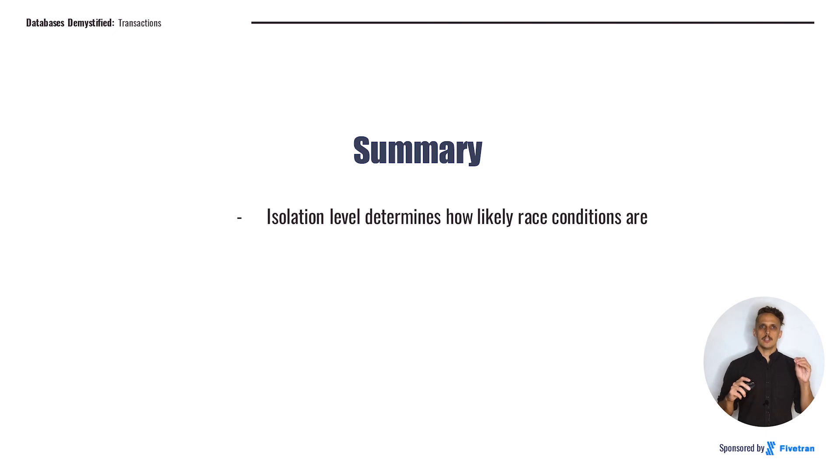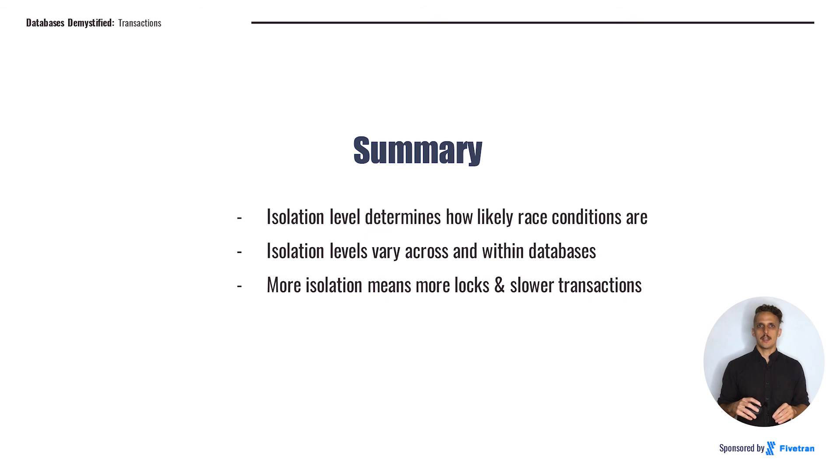So let's summarize. Isolation level determines how likely race conditions are in our database. If we have more isolation, we'll have fewer race conditions, and if we have less isolation, we'll have more race conditions. These race conditions can lead to bugs that can be very difficult to deal with. Isolation levels can vary across and within databases. Each database implements these different isolation levels a little bit differently. If you're working closely with these databases, it's really important to make sure to read the documentation closely, and even test it if you can, to make sure that the database is going to work the way that you expect it will when different processes are operating in parallel. More isolation means more locks and slower transactions, and that will in turn slow down the application that is using the database. And finally, database locking can cause unanticipated problems under production workloads. People often forget about the locking that's happening under the hood, and you need to make sure that you're testing any jobs that would be performed on a production database appropriately.